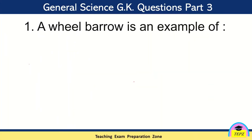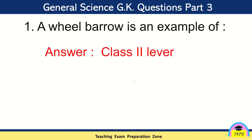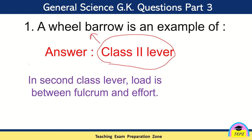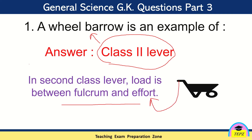Question 1: A wheelbarrow is an example of a Class 2 lever. There are three classes of levers — Class 1, Class 2, and Class 3. In a Class 2 lever, the load is between the fulcrum and the effort. Looking at the picture of the wheelbarrow: we apply force (effort) at the handles, the load is placed in the center, and the wheel support acts as the fulcrum. This is how the Class 2 lever works.